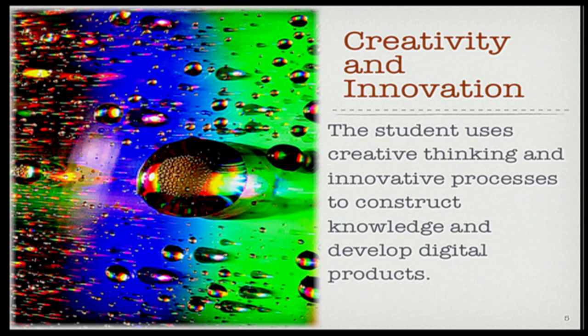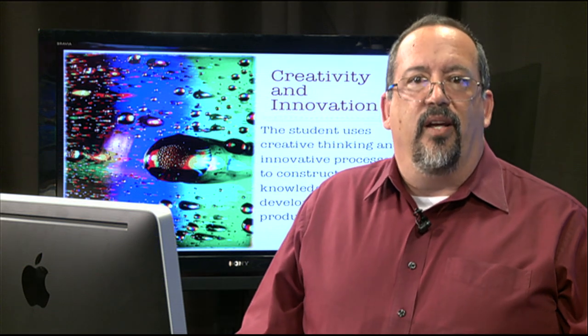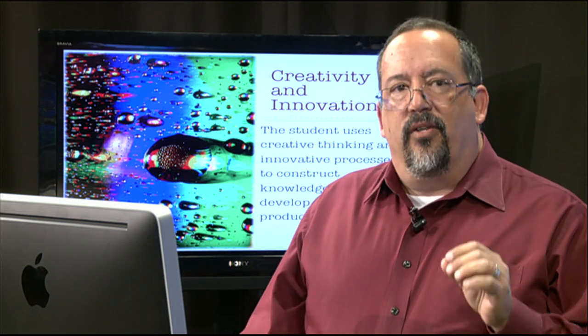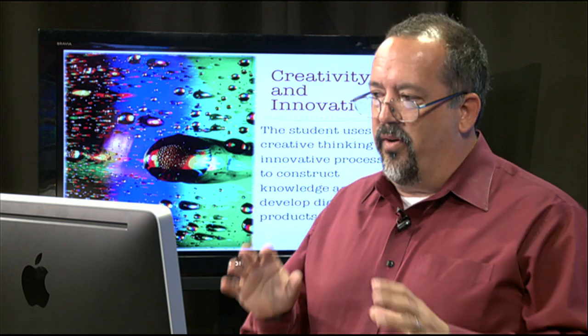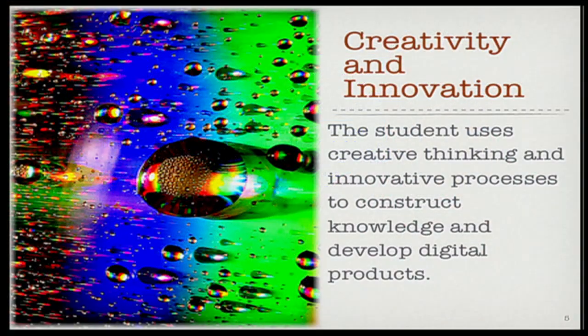Let's take a look at the first strand, which is creativity and innovation. I want to give you the exact language the state uses so you understand what they're asking our students to do. It specifically says: 'The student uses creative thinking and innovative processes to construct knowledge and develop digital products.' So start thinking about what you do in your classroom to have students do creative thinking and innovative processes to construct knowledge and develop digital products.